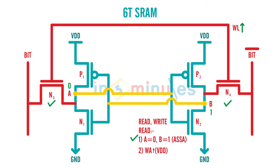The next thing we need to do is make our bit and bit-bar also high — that is, make them VDD. If bit is VDD and bit-bar is also VDD, don't get confused — bit and bit-bar are just names; they can have the same polarity. In future clips we will see how to make both of them VDD at the same time, but for now let's set bit and bit-bar equal to VDD.